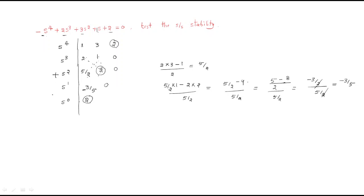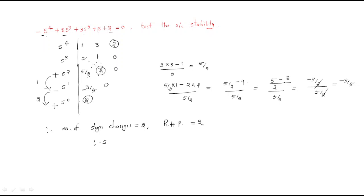Observing the signs: positive, positive, positive, negative, positive. Sign changes from positive to negative and negative to positive — number of sign changes equals 2. Therefore, the number of right-hand side poles is 2, and the given system is unstable. Whenever right-hand poles are available, the system is unstable.